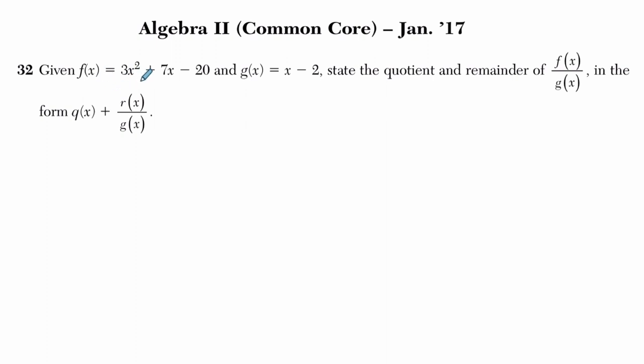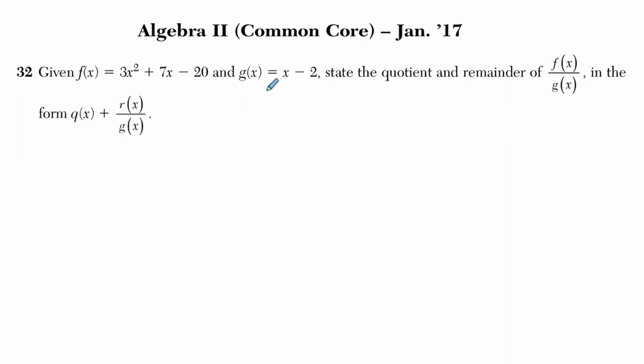We're given that f(x) equals 3x squared plus 7x minus 20 and g(x) equals x minus 2. State the quotient and remainder of f(x) over g(x) in the form q(x) plus r(x) over g(x).